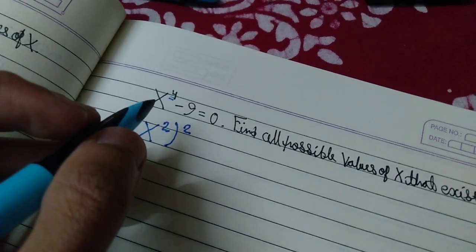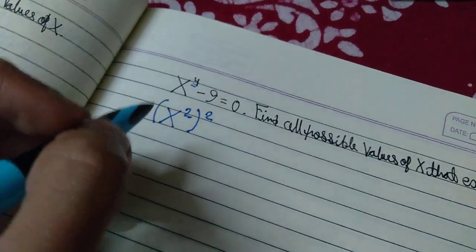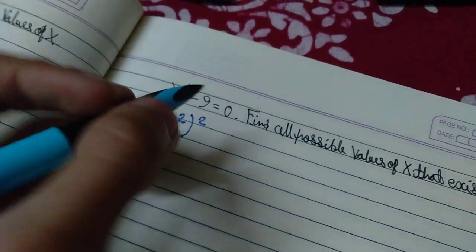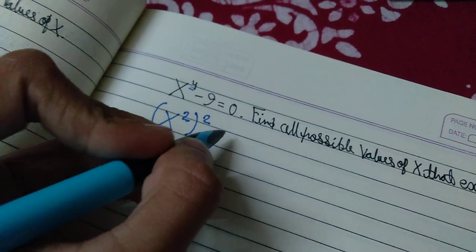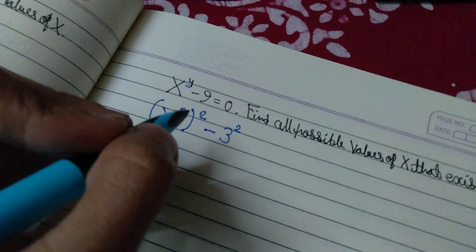So x squared whole squared is just x to the power 2 times 2, which gets us back to x to the fourth. That's why I wrote x to the 4 as x squared whole squared. And 9 can be expressed as 3 squared. Now why did I express 9